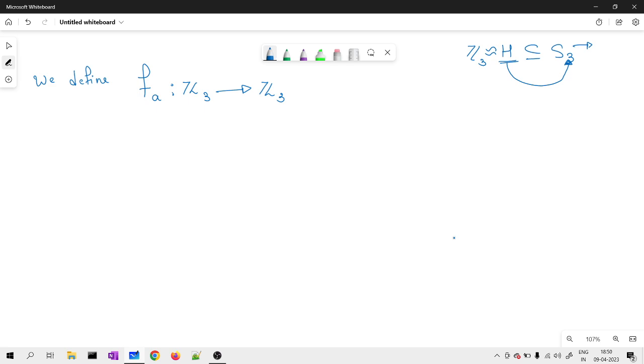So, what I defined? I defined F_a from Z3 to Z3 as F_a of x̄ is same as ā plus x̄. If I want to write, I can write it like this as well. So that means how many such functions you can define? Here this ā is any element of Z3. So, how many such functions you can define?